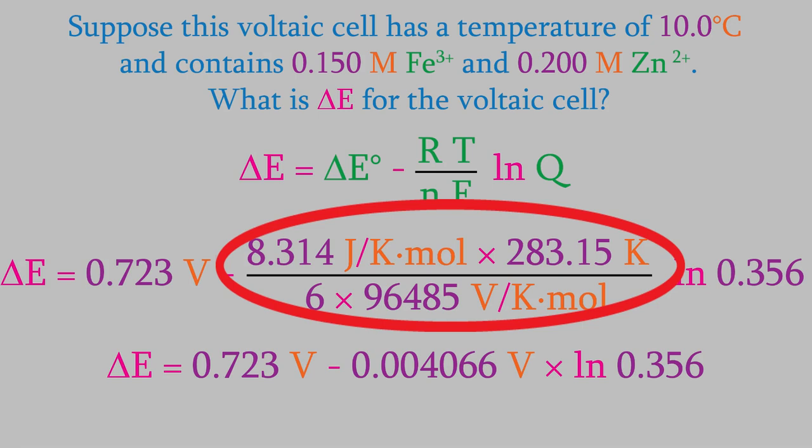Now we can solve the equation, which gives us an overall voltage of 0.727 volts. So the Nernst equation can give us very accurate predictions of the voltage of a voltaic cell, or a battery.